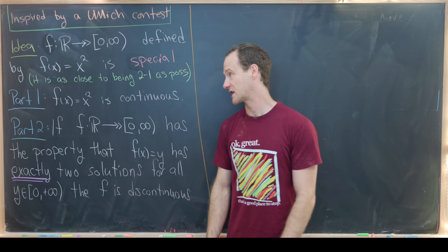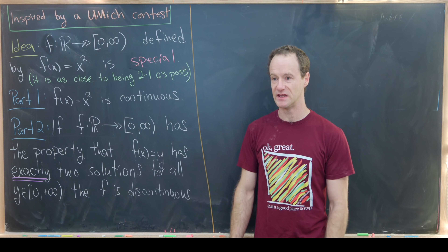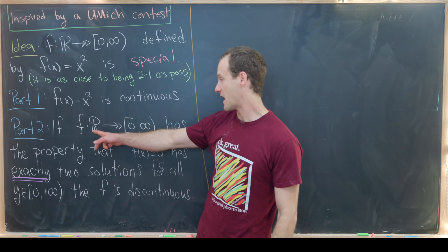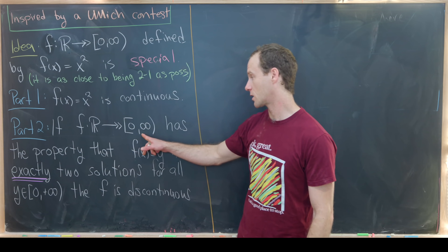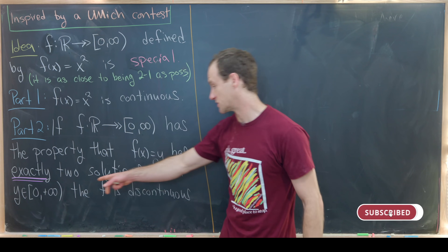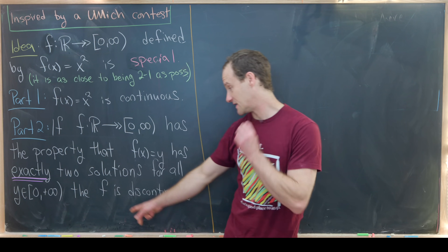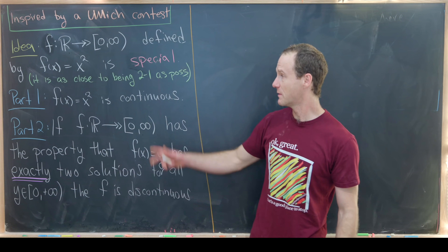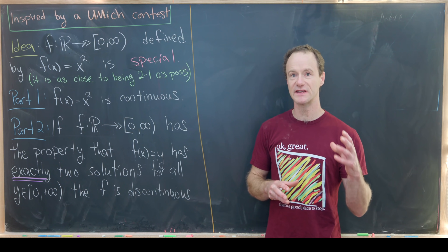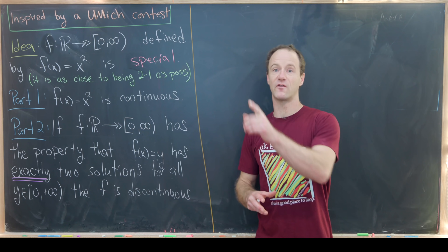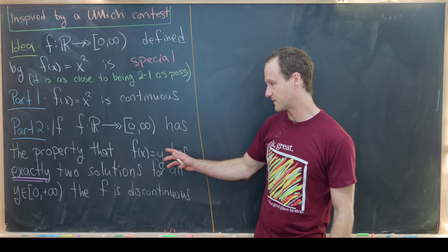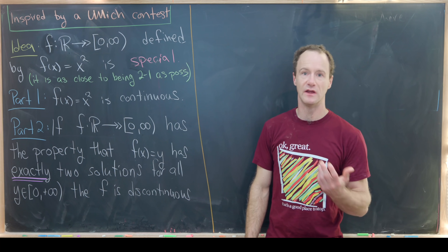We'll approach this in two parts. First, we'll show that f(x) = x² is continuous using the epsilon-delta definition. Second, we'll assume we have an onto function f from ℝ to [0, ∞) where f(x) = y has exactly two solutions for all y, and show that such a function must be discontinuous. That vertex of the parabola — the point where x² fails to be two-to-one — is crucial for allowing continuity.